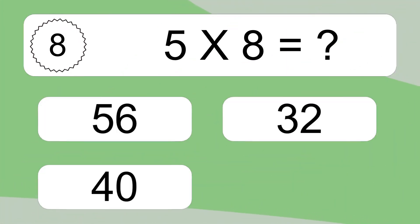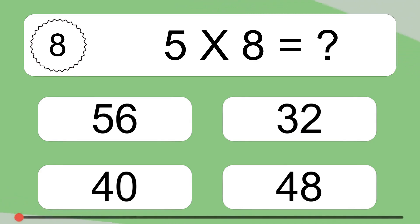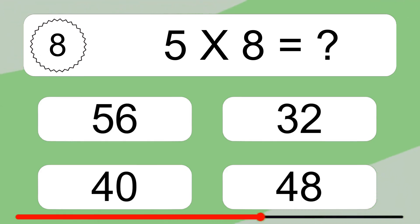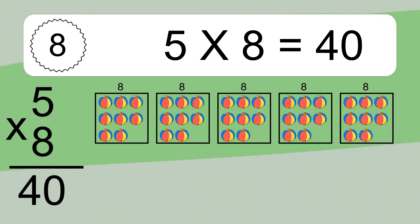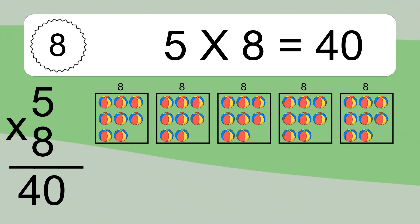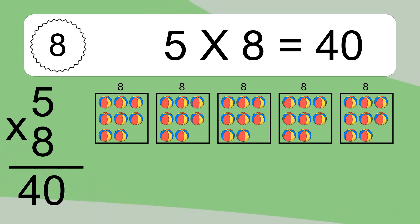Five times eight equals what? Five times eight equals 40. We have five boxes and each box has eight colorful balls inside. If you count all the balls in all the boxes together, you will have five times eight balls. This equals 40 balls.